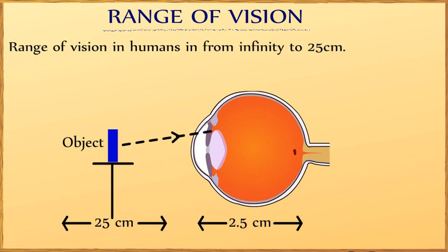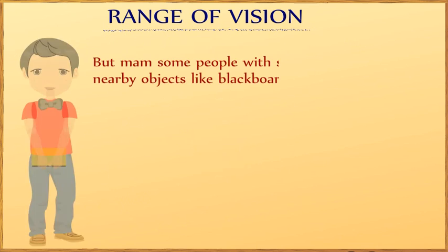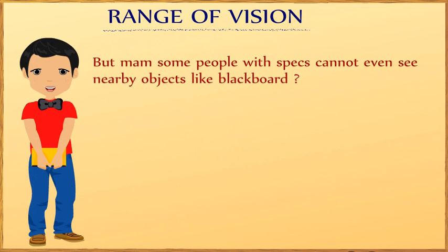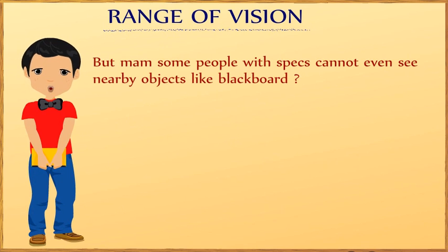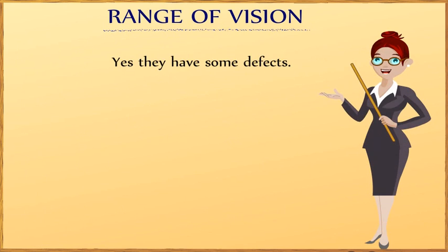The range of vision in humans is from infinity to 25 cm. Some people with spectacles cannot even see nearby objects like the blackboard — yes, they have some defects.